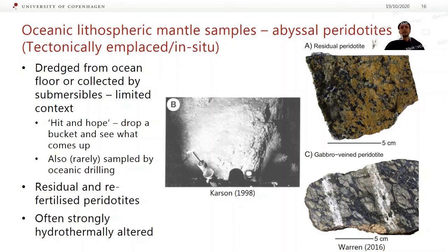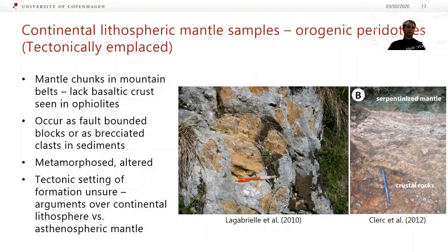What we see with these is a mix of residual peridotites and some re-fertilized peridotites, and they're often strongly hydrothermally altered from being emplaced on the ocean floor. The left image from Carson 1998 is just a view out of a submersible to give you an idea — you can see a fault scarp with that craggy-looking feature. On the right are images of the abyssal peridotites: a residual peridotite and a peridotite with some gabbro veins in it, which has been re-fertilized by some melt passing through.